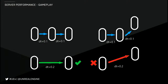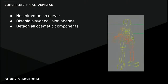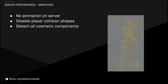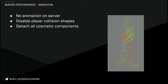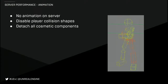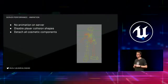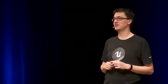The final thing on the server we looked at was animation. We don't need to run the animation logic on the server — it's not going to be perfectly synchronized anyway, and we use different methods to verify things like hits. So we can turn off animation altogether. We can also disable the collision shapes — we don't need to move those around on the server, skipping a whole bunch of work. And we get rid of any cosmetic components like particles and audio. So that covers a ton of different aspects, and now I'm going to hand off to Nick Penwarden, who's going to talk about taking the console-specific parts and getting the game to run really well on consoles.